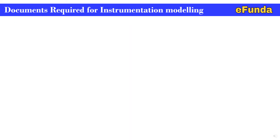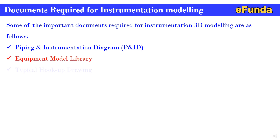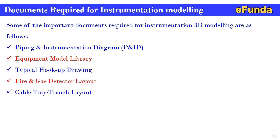After understanding 3D modeling, its advantages, and the different types of 3D modeling software, we have come to the point of documents required for instrumentation modeling activities. Some of the important documents required for instrumentation 3D modeling are: Piping and Instrumentation Diagram (P&ID), equipment model library, typical hookup drawing, fire and gas detector layout, and cable tray and trench layout. These help you to build a library and accordingly plan the modeling activities for the required plant.